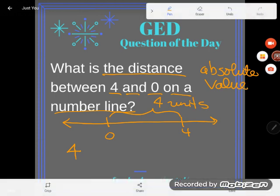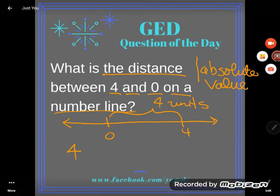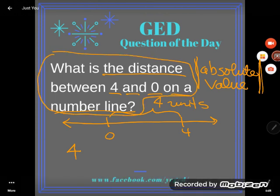And we have symbols for that. The symbols for absolute value look like these up and down, straight up and down bars. So mathematically, if I wanted to ask this question in symbols instead of words, I would say, what is the distance between 4 and 0 on a number line? That is what that means.